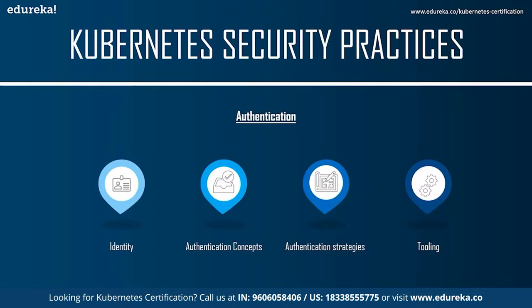For programmatic application access to the Kubernetes API — for example, to query, create, or update resources such as pods, services, or deployments — Kubernetes has a top-level resource to represent application identity: the service account. A service account is a namespace-scoped resource; many business applications don't need to manipulate Kubernetes resources directly, so they can have a service account with limited permissions.